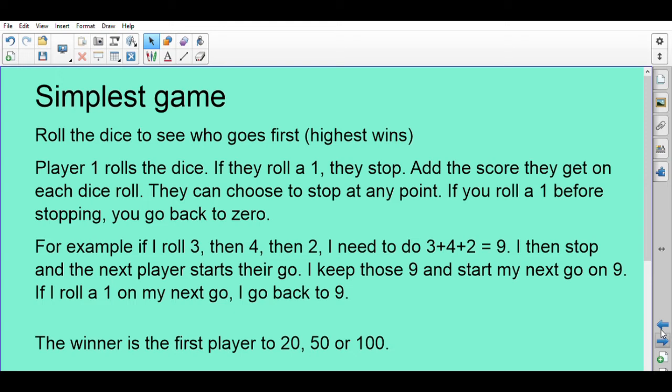Here's an example: if I roll a three, then a four, then a two, I need to do the calculation 3 + 4 + 2 = 9. I then decide to stop because I don't want to risk getting a one, and the next player can start their go. I keep those nine and start my next go on nine. However, if on my next go I roll a one, I then just go back to nine. So I kind of banked that score on my previous go. The winner is the first player to 20, to 50, or to 100. It depends how long you want to play for.